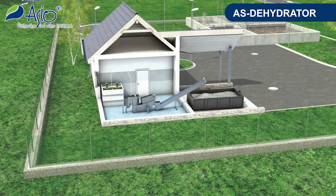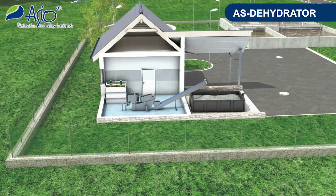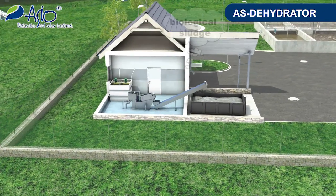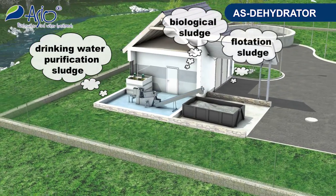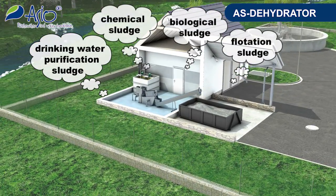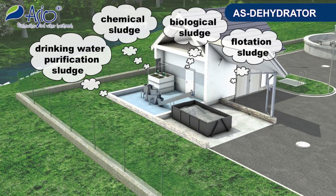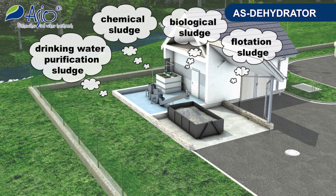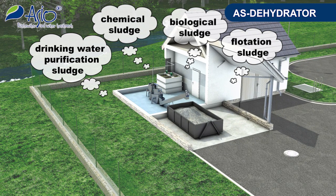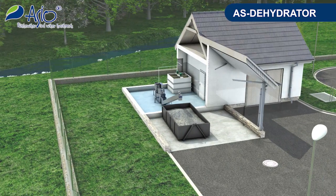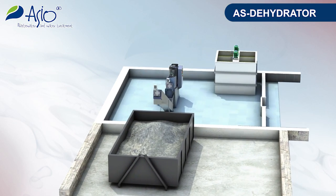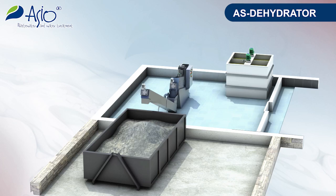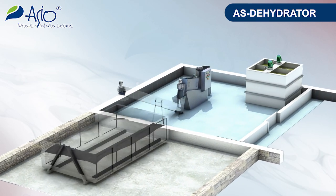The AS Dehydrator is able to cope not only with biological treatment sludge, but can also be used for dewatering flotation sludge, chemical sludge, drinking water purification sludge, and more. However, in order to verify that the dehydrator functions with other sludge types, it is always advisable to run a pilot test.